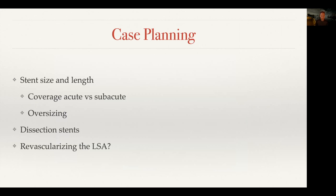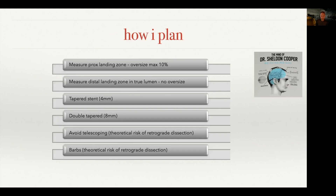In the subacute phase, because there is perfusion of the false lumen and these patients are at least two weeks out, you can be more generous with the amount of aorta you cover. In acute dissection I tend to put in one covered stent; in subacute dissections I stent all the way down to the celiac axis to cover as much of the thoracic aorta as possible to promote false lumen thrombosis. I tend to oversize 10% — not much more. Dissection stents go down to the bifurcation. We revascularize the subclavian in every case to decrease risk of spinal cord ischemia. I measure my distal landing zone in the true lumen, try not to oversize that too much, and use a tapered stent graft. I avoid telescoping as much as possible because your risk of a retrograde dissection goes up.